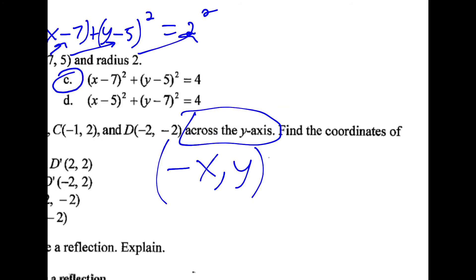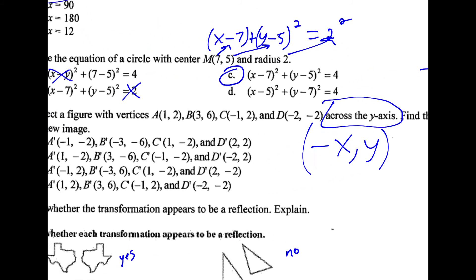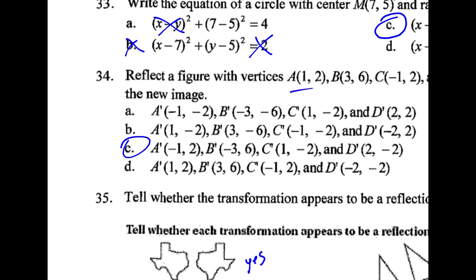The next one, if you reflect across the y axis, I think about across, we were over here, now we're over here. Whatever our x coordinate is, it's flipped. Our y coordinate stays the same. So if I just look at point a, this is going to stay 2. This is going to become a negative 1. That's why the answer is c.